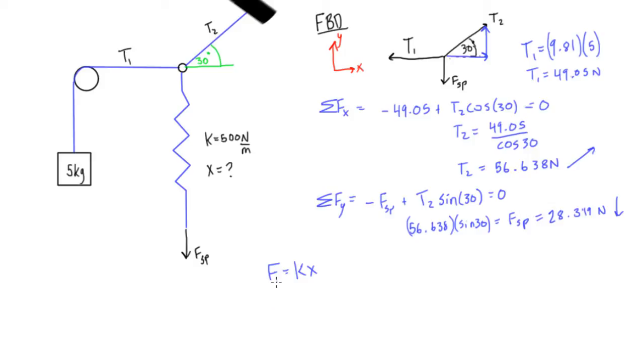So we already have f, we can say this is fsp, f spring, so we have 28.319 over k which is 500, so this is newtons and this is over 500 newtons per meter is going to equal x, this is our deflection from the unstretched position, and when you calculate this 28.319 divided by 500 we will get 0.057 meters or this is also equal to 5.7 centimeters. So in order for this whole system to be in static equilibrium, especially with this rope angled at 30 degrees and this rope here horizontal with this pulley here not moving,